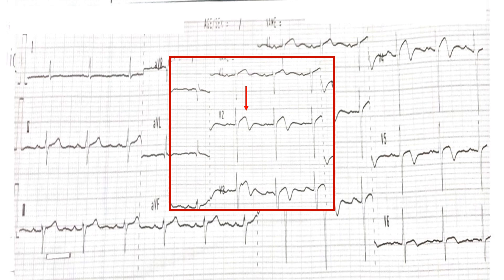I have zoomed in the T waves for you — these are leads V2 and V3. I have marked the findings with arrows. Do you think these are normal, healthy T waves? No. Look at the T waves: there is a positive terminal followed by a negative, then returning to baseline — a positive-and-negative biphasic T wave pattern. Similar biphasic T waves are found in lead V3 as well.